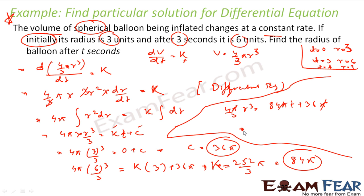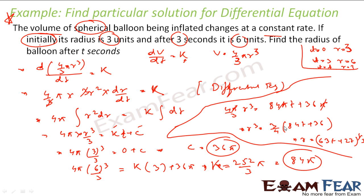Simplifying: (3/4) · 84 = 63 and (3/4) · 36 = 27, so r³ = 63t + 27. Therefore r = (63t + 27)^(1/3). This is the value of r at t seconds. Please understand this question — it is a very challenging question, but if you understand it properly it becomes clear.